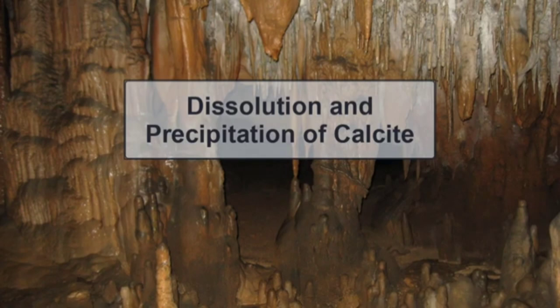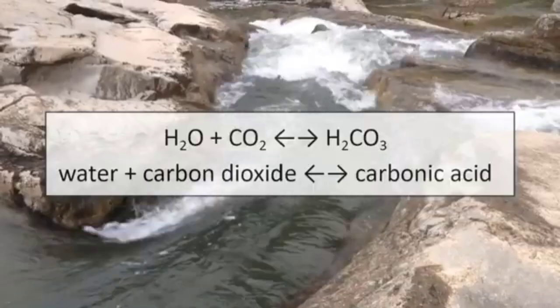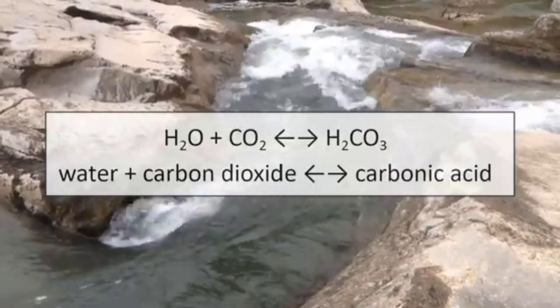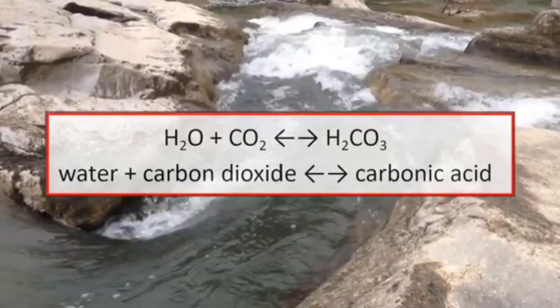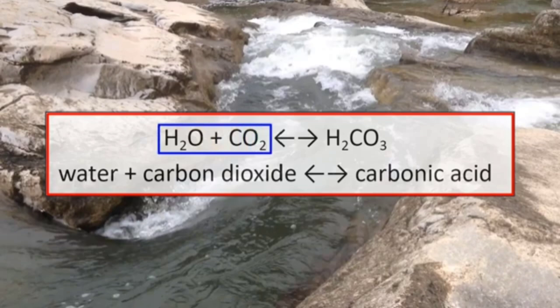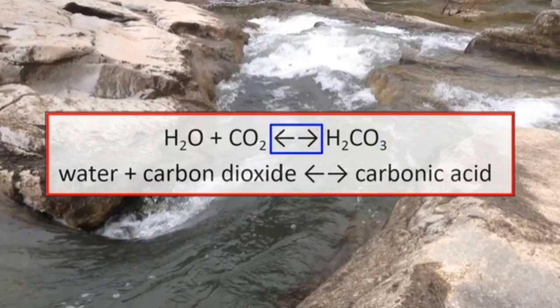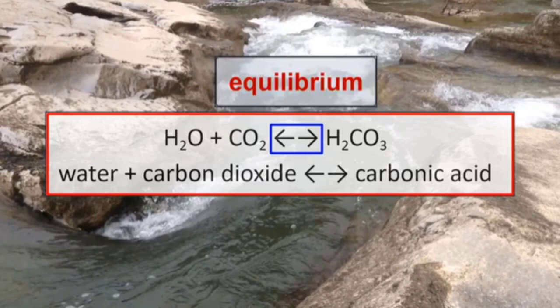The rest of this video takes a closer look at the chemistry of the dissolution and precipitation of calcite and how it forms stalactites and stalagmites. Natural surface waters are all slightly acidic because of the reaction of water and carbon dioxide that produces carbonic acid. Here is that chemical reaction: water plus carbon dioxide produces carbonic acid. The double arrows between the ingredients on the left and right means that this equation finds an equilibrium, and any changes to the relative amount of the ingredients on either side will cause the reaction to move in the direction that will undo that change and re-establish equilibrium.